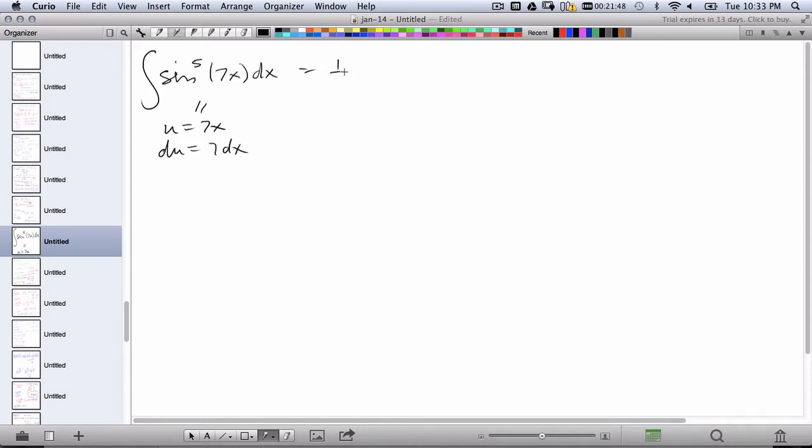And so you can rewrite this as the integral of 1/7th times the integral of sine to the fifth u du.